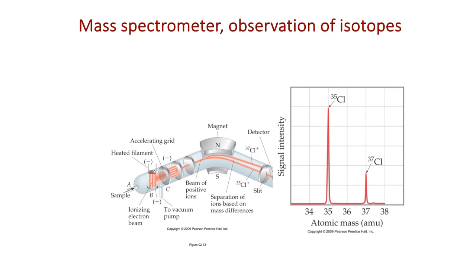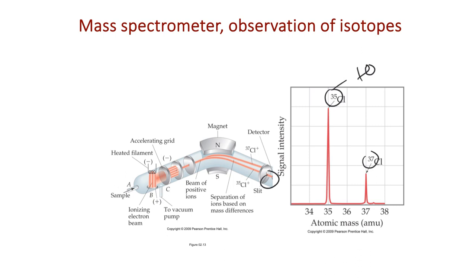Mass spectrometry tells us what isotopes a given element exists as. You put a charge onto an atom, bend it through a magnetic field, and see where you get signal. For chlorine, you get signal at mass numbers 35 and 37 within a natural sample — chlorine with 18 neutrons and chlorine with 20 neutrons. This is how we determine different isotopes and their masses for any element. We'll pick up after this slide on Friday. Enjoy the rest of your day.